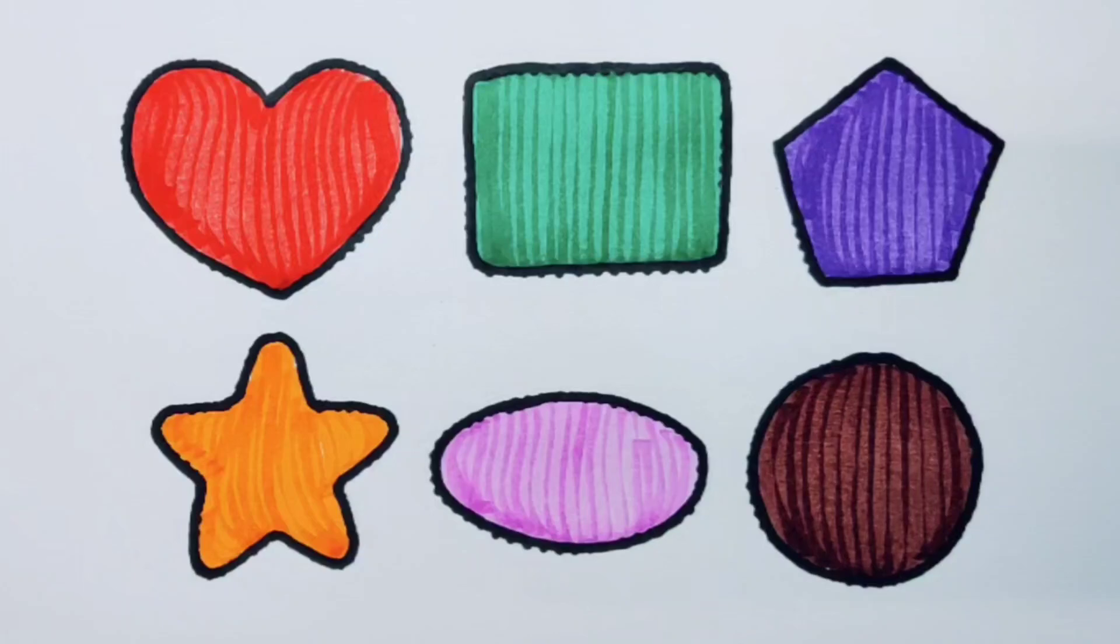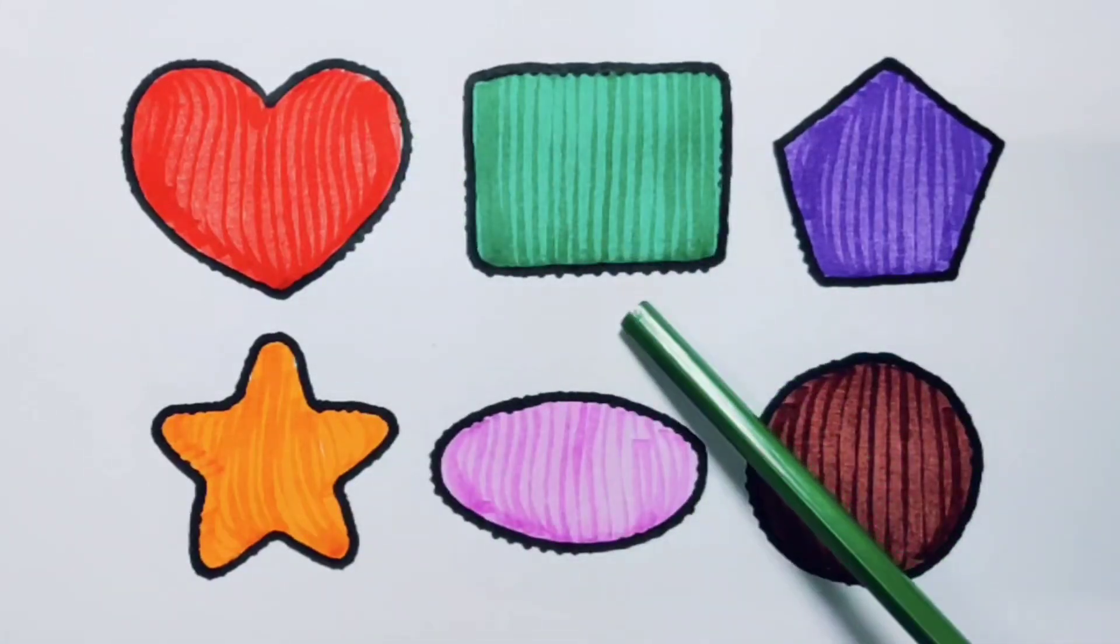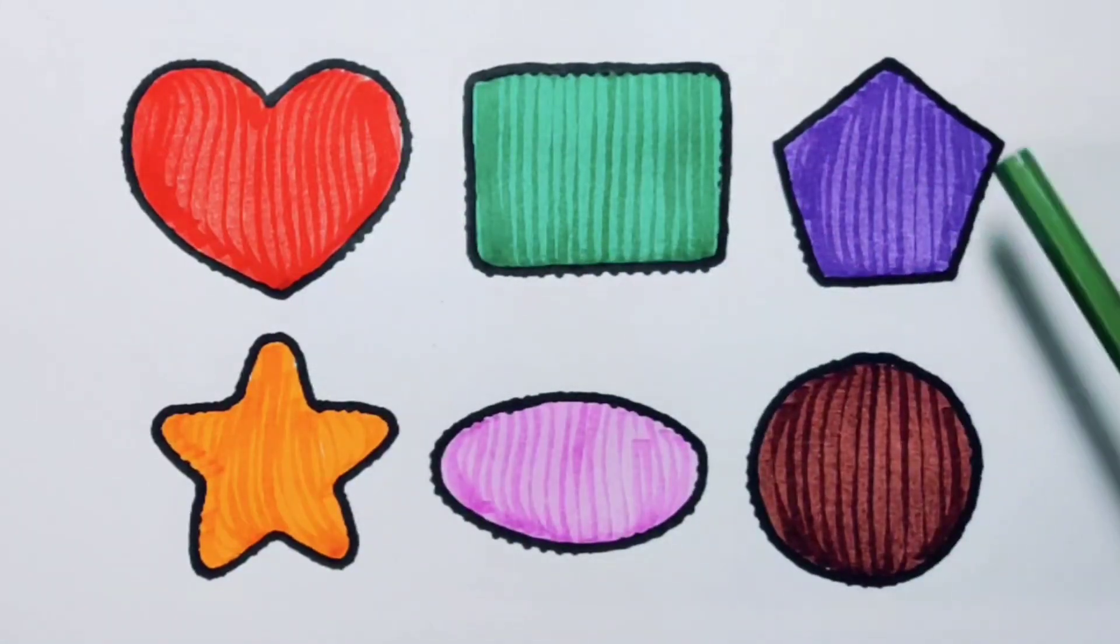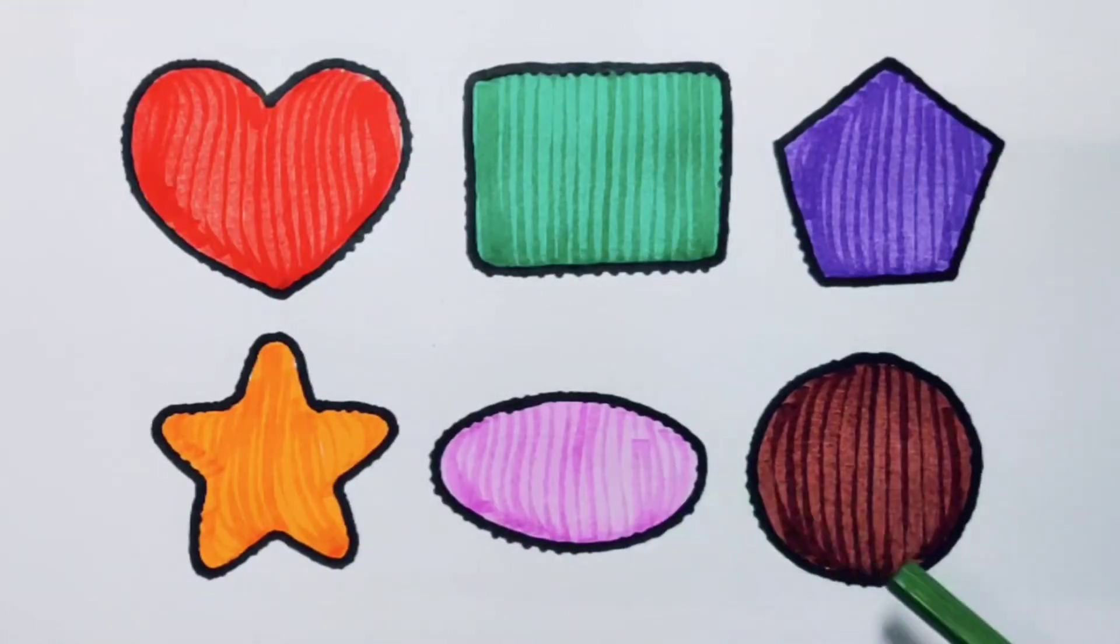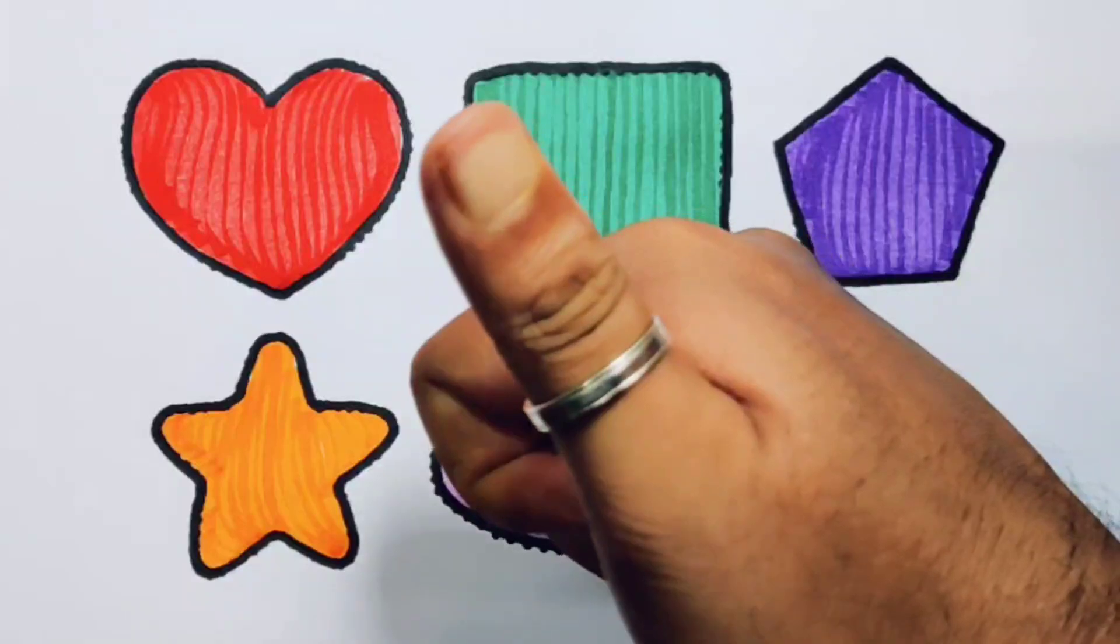What we learned: we learned red color heart, green color rectangle, purple color pentagon, orange color star, pink color oval, chocolate color circle. Thank you for watching my video.